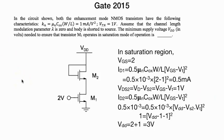In this, the gate is connected to the drain and we can say that MOSFET is in saturation. In the circuit shown, both the enhancement mode NMOS transistors have the following characteristics: KN, VTN. Assume the channel modulation parameter lambda is zero.